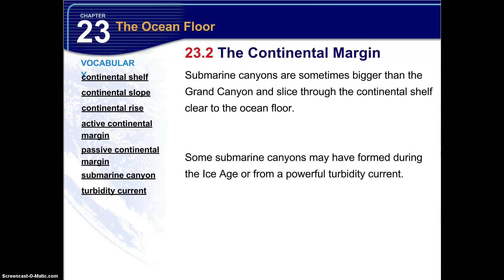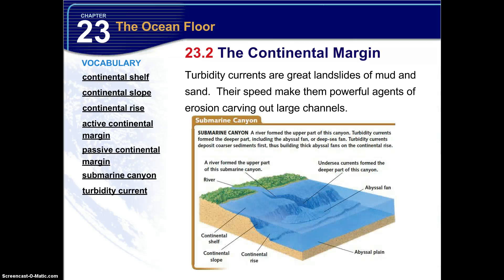Now submarine canyons are sometimes bigger than the Grand Canyon, and slice through the continental shelf all the way clear to the ocean floor. Now some submarine canyons may have formed during the ice age, or from a powerful turbidity current. Now turbidity currents are great landslides of mud and sand. Their speed makes them powerful agents of erosion, carving out large channels. Here's an example of what a turbidity current might look like as a cross section and looking underneath the ocean floor.